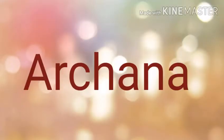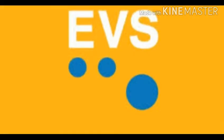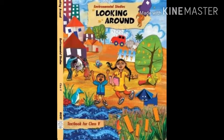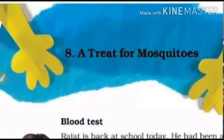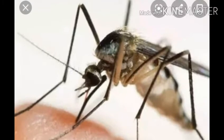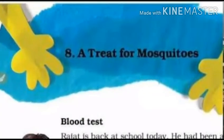Hello students, I am Archana, your EVS teacher. I hope you are fine. Today we will discuss chapter number 8 of EVS of your book Looking Around. The name of the chapter is A Treat for Mosquitoes.